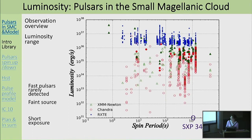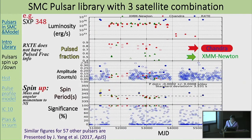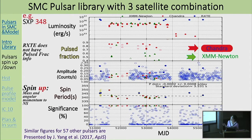Individually, we put the three satellite measurements together. For example, SXP348—the pulsar with a spin period of 348 seconds—uses different colors for different satellites: blue for RXTE, red for Chandra, and green for XMM-Newton. We have a 17-year history of luminosity, pulse fraction, amplitude, spin period, and the significance of the orbital period found. RXTE doesn't have pulse fraction information because it's a non-imaging detector with multiple sources always in the field of view. Filled symbols indicate sources detected with greater than 99% significance.